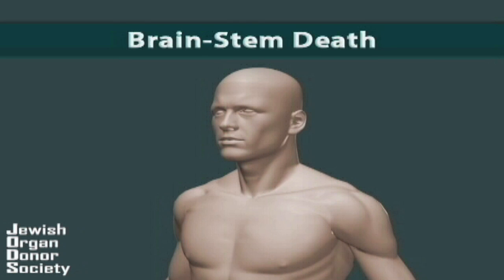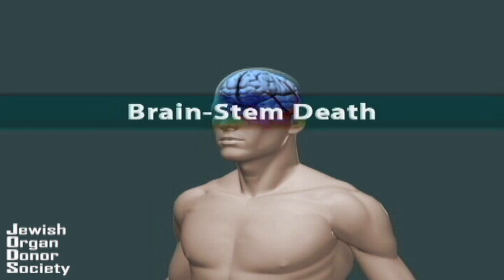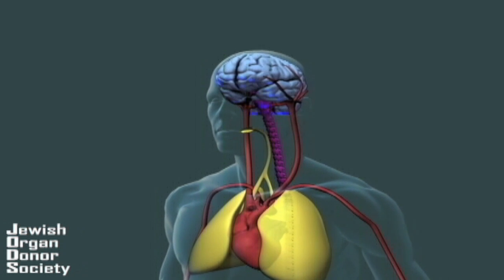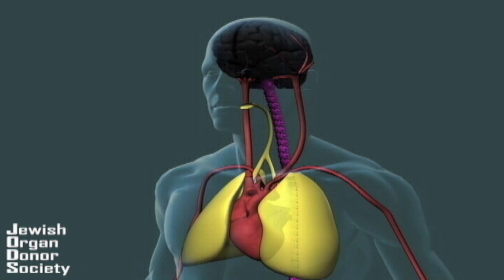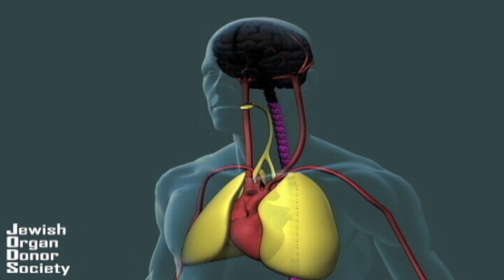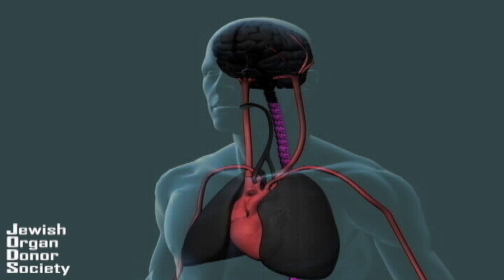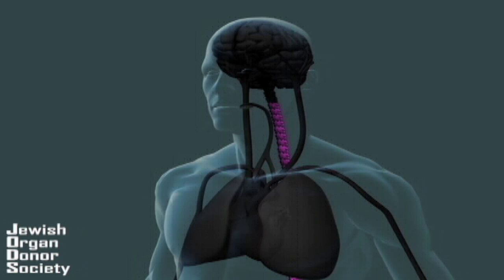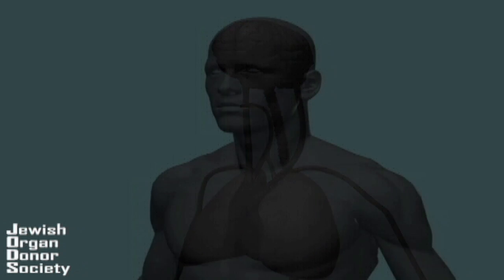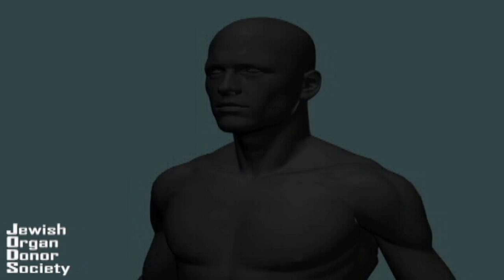Brain death is a term used to describe the whole brain dying — both the cortex and the brainstem. The brainstem is the central nervous system of the human body and the center of consciousness. If the brainstem dies, respiration would stop. Once the heart stops receiving oxygen, it too would die and stop beating, and all other organs will also die due to oxygen deprivation.